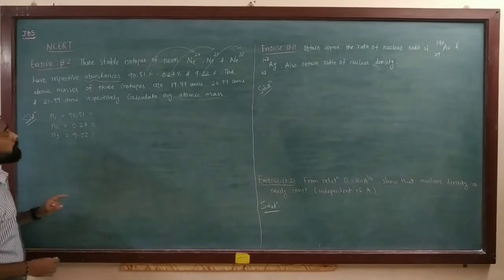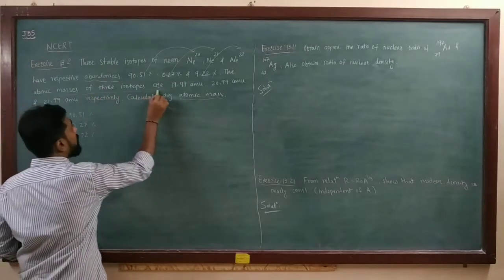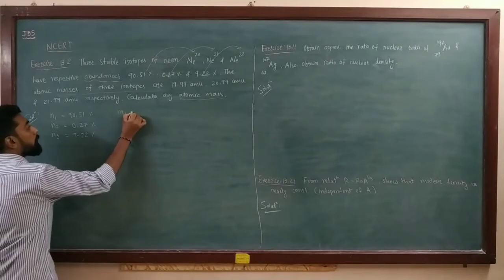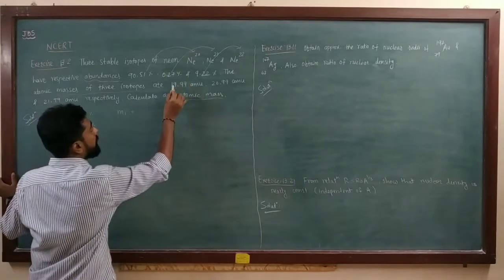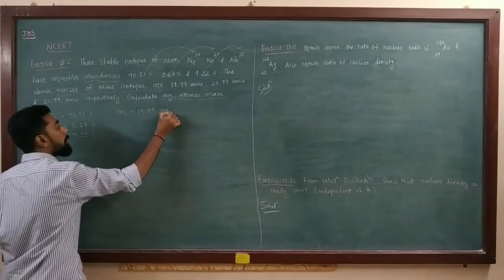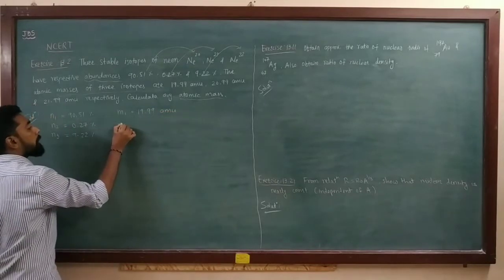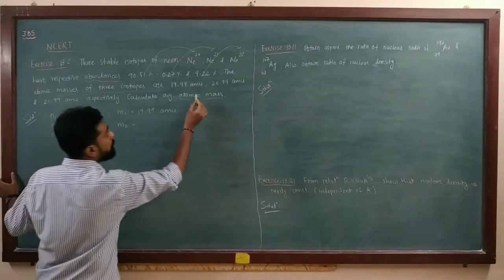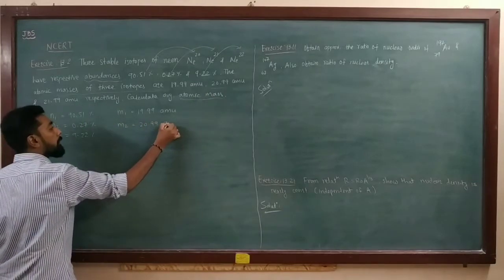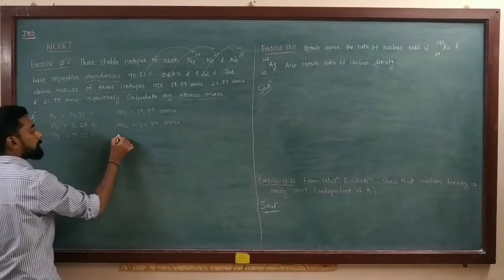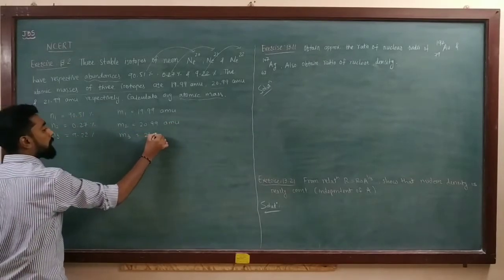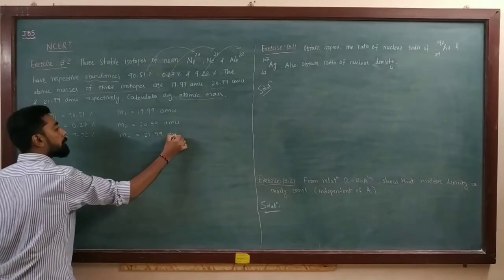We have also been given the atomic masses of the three isotopes. M1 is equal to 19.99 AMU for Ne-20. Then M2 is equal to 20.99 AMU, and M3 is equal to 21.99 AMU.